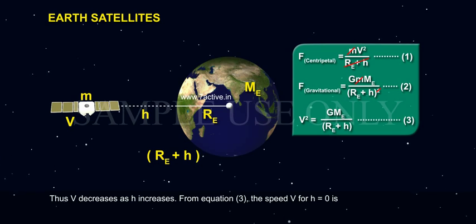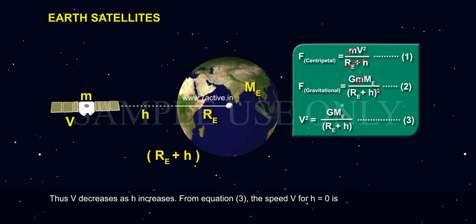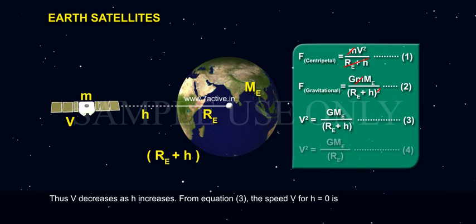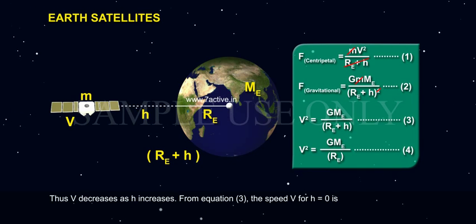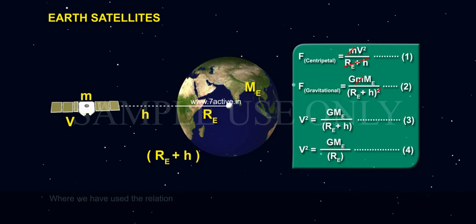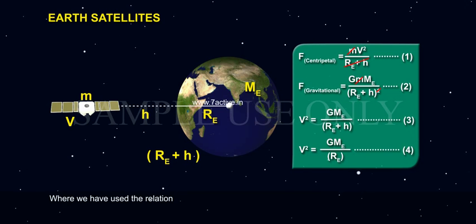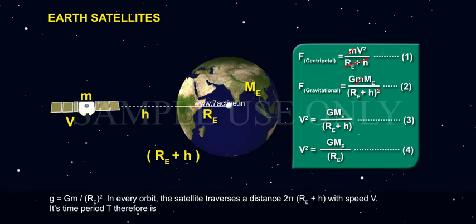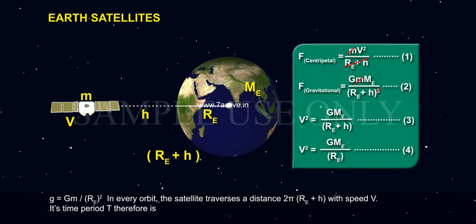From equation 3, the speed V for H equals 0 is V² equals GME divided by RE, Equation 4, where we have used the relation g equals GM divided by RE².